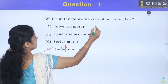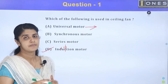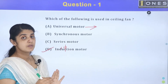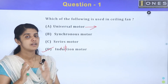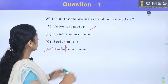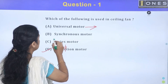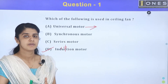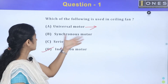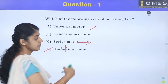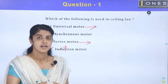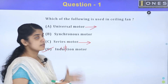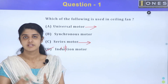Looking at other motors: the universal motor is used in domestic applications like grinders and sewing machines. The universal motor can be used in both AC and DC. Construction-wise it is similar to the universal motor. The series motor is used in fixed-speed, constant-speed rotation applications with high starting torque, heavy load applications — such as cranes and hoists.